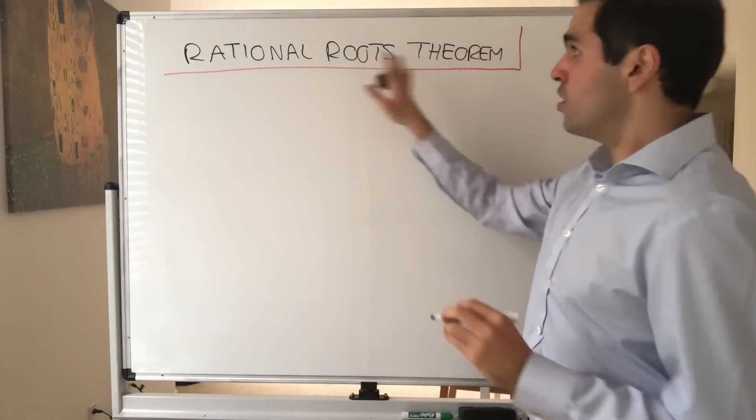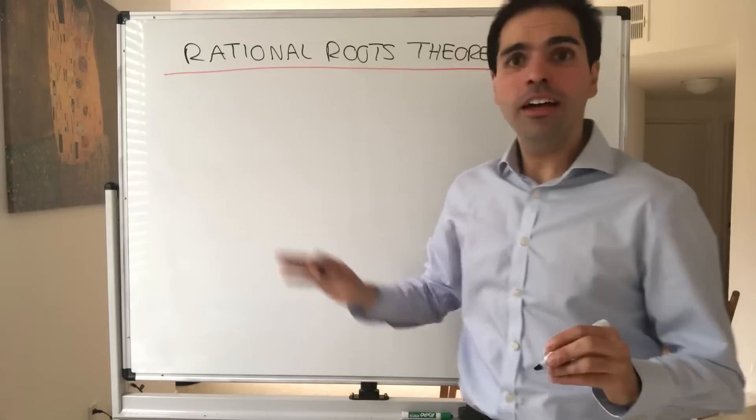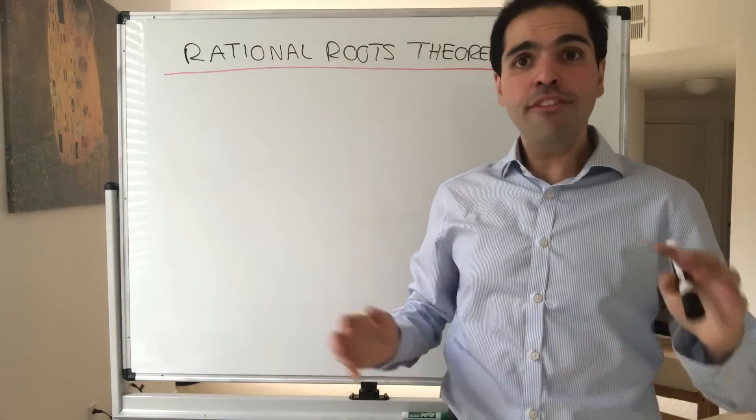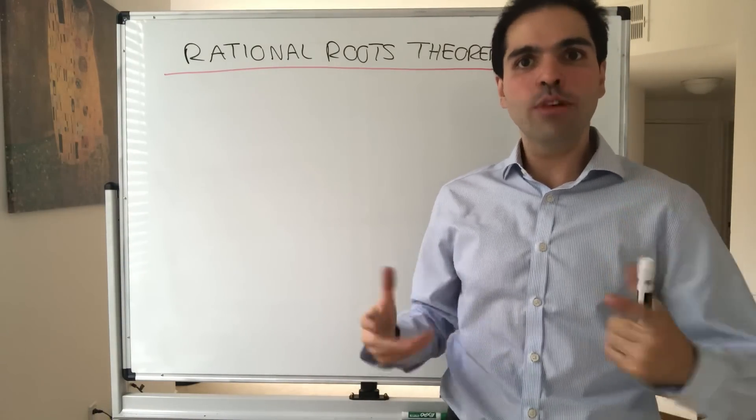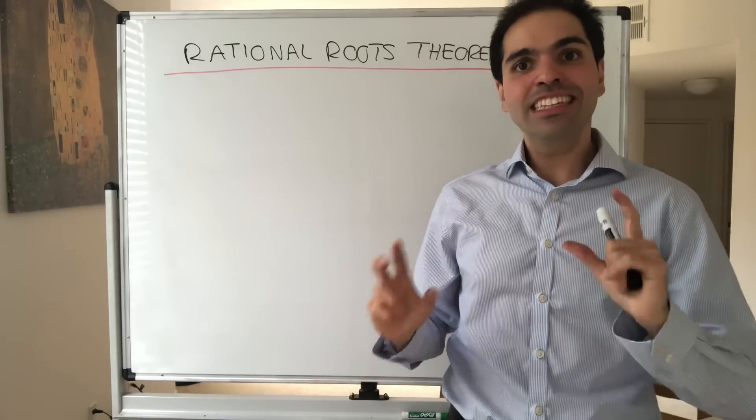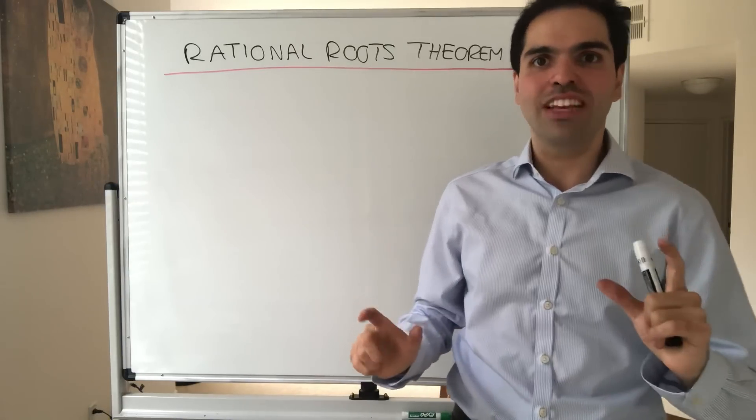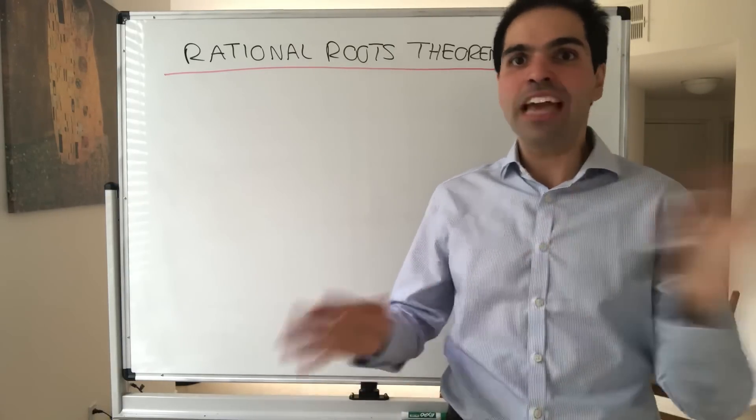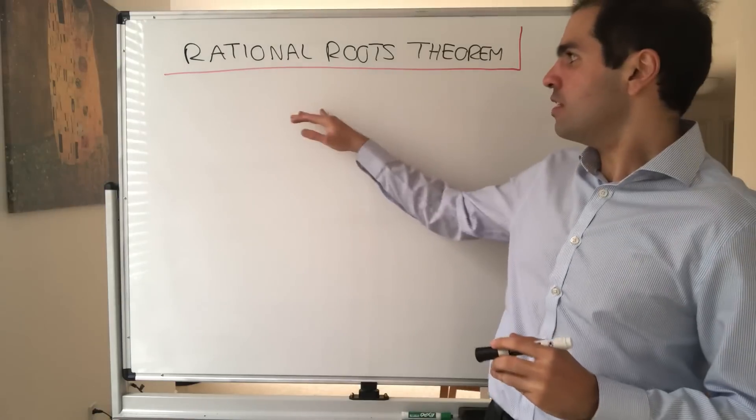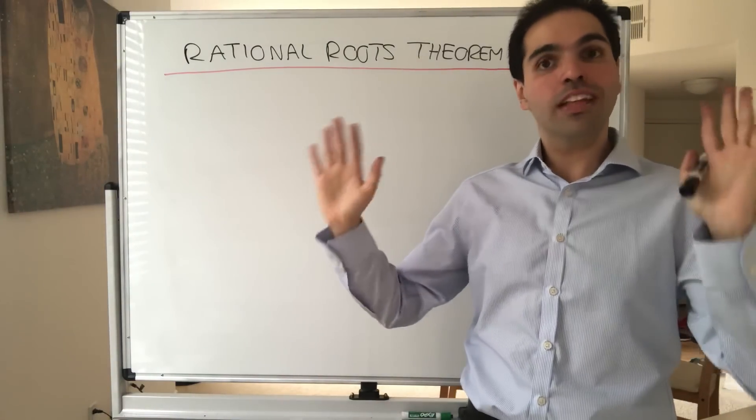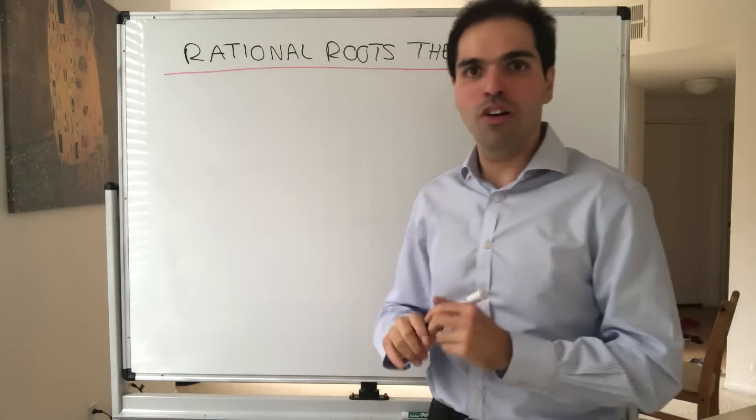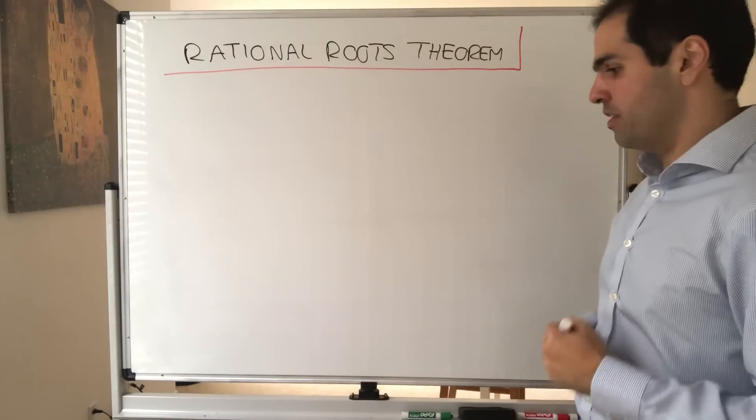It's called the rational roots theorem, and what it says is if a polynomial has a rational root, namely a zero that's a fraction, then it needs to have a very specific structure. It cannot be anything you want. It's kind of similar to the quadratic formula, which gives you a formula for the roots of a polynomial, if they exist.